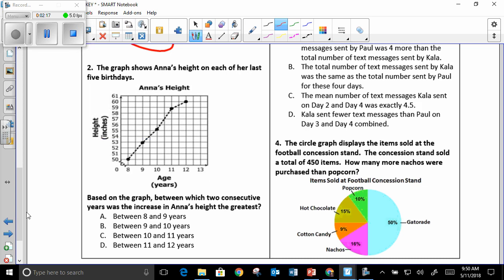Number two, the graph shows Anna's height on each of her last five birthdays. Based on the graph, between which two consecutive years was the increase in Anna's height the greatest? If you look between 10 years old and 11 years old, the increase was much higher than all the previous years. So the answer is C.